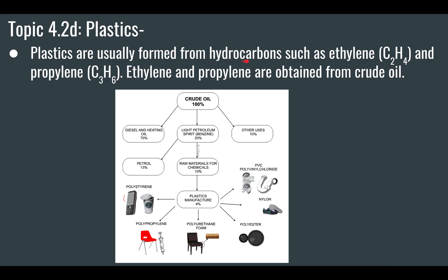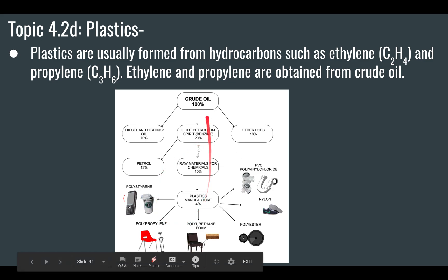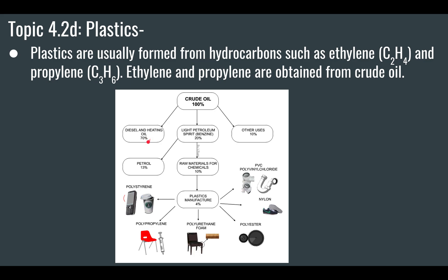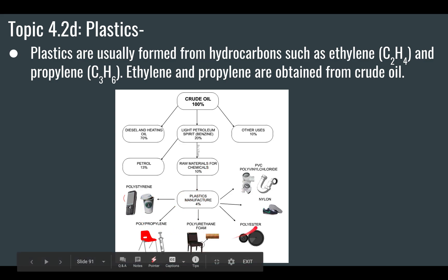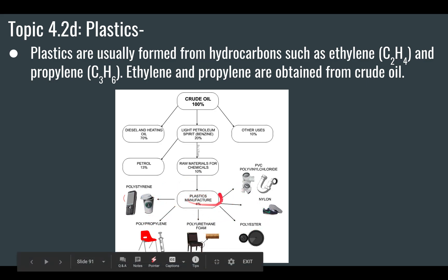Plastics are usually formed from hydrocarbons such as ethylene and propylene, which are obtained from crude oil. As you can see in this chart, of the crude oil produced in the world, most goes towards heating oil, petrol, and raw materials for chemicals like fertilizers. About 4% goes to plastic use — so that gives you some idea of how much of crude oil production goes into plastic manufacture.